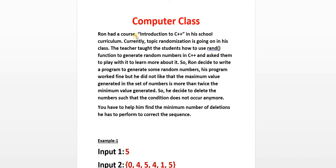Here is the question: Ron had a course 'Introduction to C++' in his school curriculum. Currently, the topic of randomization is going on in his class. The teacher taught the students how to use the rand function — the random function to generate random numbers in C++ — and asked them to play with it. Ron decided to write a program to generate some random numbers. His program worked fine, but he did not like that the maximum value generated in the set of numbers is more than twice the minimum value generated.